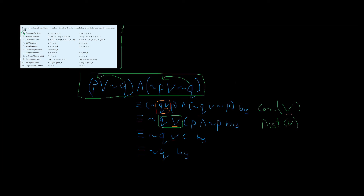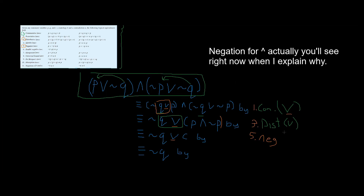In the following logical equivalence statement it says negation q OR — and what happened was p AND negation p. What law is that? That's going to be our negation law, which is number five. The steps so far were: step three for distributive, step one for commutative, and now step five for negation.